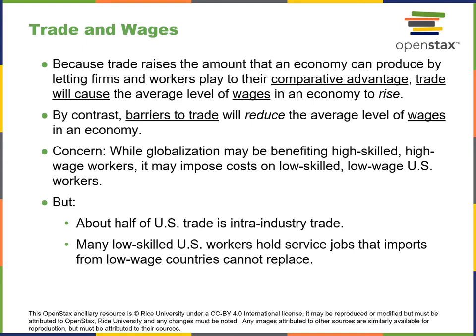Trade and wages: trade amounts to an economy that can produce more by letting firms play to their comparative advantage. Trade will cause the average level of wages in an economy to rise, while trade barriers will reduce the average level of wages. The concern is that while globalism may be benefiting high-skilled, high-wage workers, it imposes costs on low-skilled, low-wage US workers. About half of US trade is intra-industry trade, and many low-skilled workers hold service jobs at import from low-wage countries that cannot be replaced. There are winners and losers.